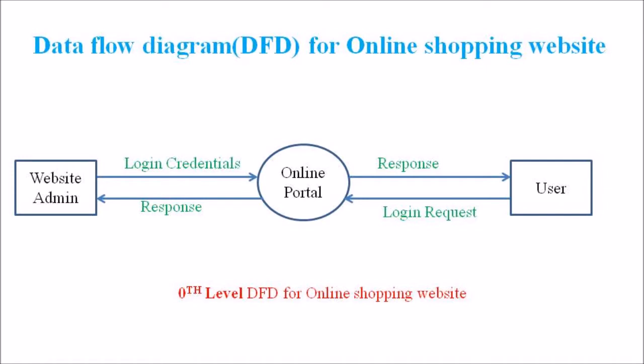Now we are going to discuss the data flow diagram for the online shopping website. As mentioned in our previous lectures, we represent the level 0 DFD with the admin as well as the user as the end entities, represented in rectangular boxes. The process for this level 0 DFD is the online portal — that is, the website — and both the user and the admin communicate with this process through message passing and receiving.